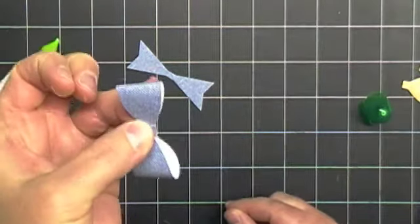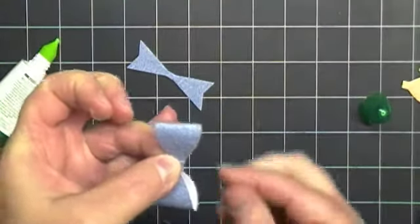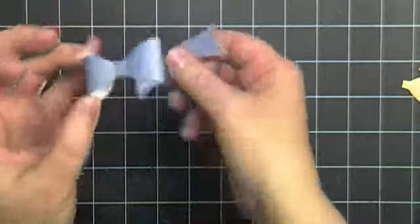Like I said, you could use glue dots if you'd like as well, but I just wanted to show you how I do it with the glue. Now you have your bow together, you can go ahead and put the tails.